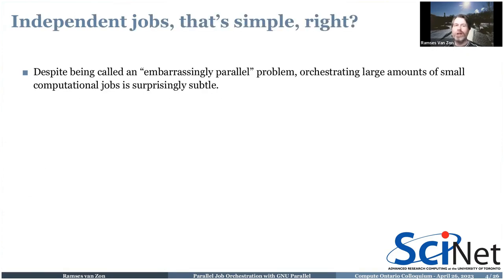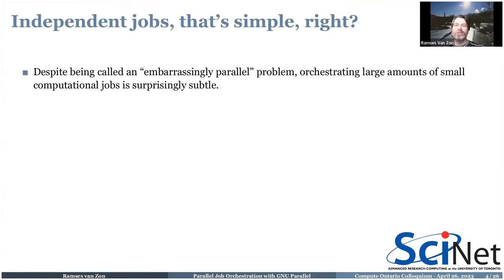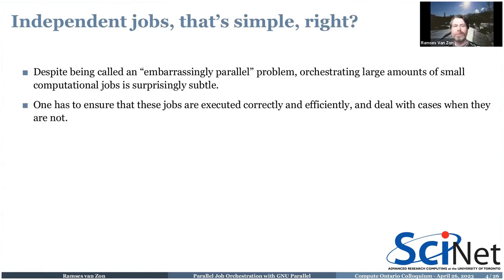Now, since they're all independent jobs, that should be simple, right? People doing parallel processing often call this an 'embarrassingly parallel' problem — you just have to run them at the same time, and if you have as many cores as problems you get perfect speedup. That turns out, especially at scale, not really to be true. The running of them in parallel is trivial in that they don't have to communicate, but there are still a lot of subtleties that have to be addressed.